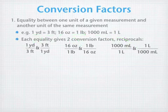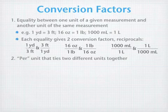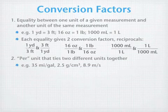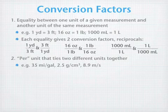The other kind of unit is a per unit. These are units that tie two different units together. For example, miles per gallon, density of grams per centimeter, or a speed of 8.9 meters per second.